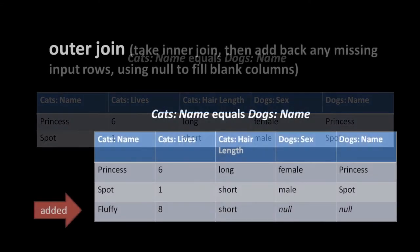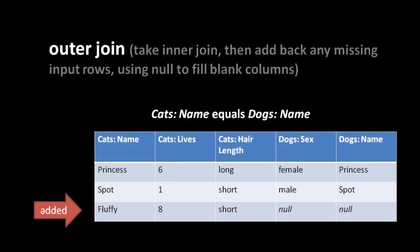The last kind of join is an outer join, where we take the inner join result and then add back in any row from one of the two original tables that is not present in the filtered result - matched up against null values. Here, the same inner join made into an outer join: whereas the inner join left us with just two rows, this outer join adds back in a third row with the cat Fluffy, matched up against null values in the two dogs columns.